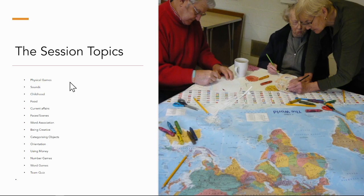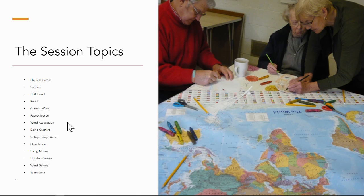The sessions are: physical games, sounds, childhood, food, current affairs, faces and scenes, word association, being creative, categorizing objects, orientation, using money, number games, word games, and then the quiz. The quiz is not a normal quiz - it's where we get people in the group to ask questions about each other, things like 'who would you trust to cut your hair?' or 'if you had a dinner party, who would you ask to create the main dish?' It's a lovely way for your group to get to know each other.